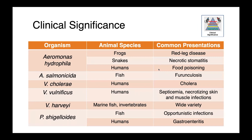Aeromonas hydrophila is associated with red leg disease in frogs and is one of many organisms that can cause necrotic stomatitis in snakes; in people, it can be a cause of food poisoning. Aeromonas salmonicida is a very important cause of furunculosis in fish, particularly farmed fish species. Vibrio cholerae causes cholera in people; other species such as Vibrio vulnificus can cause septicemia following ingestion, with necrotizing skin lesions and muscle infections. Vibrio harveyi has a very broad host range among marine organisms, infecting fish and a variety of invertebrates. Finally, Plesiomonas shigelloides causes opportunistic infections in fish and gastroenteritis in people.